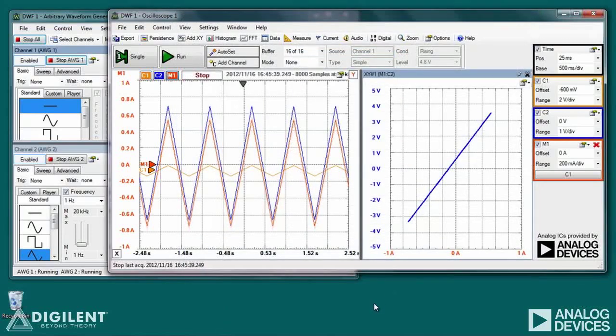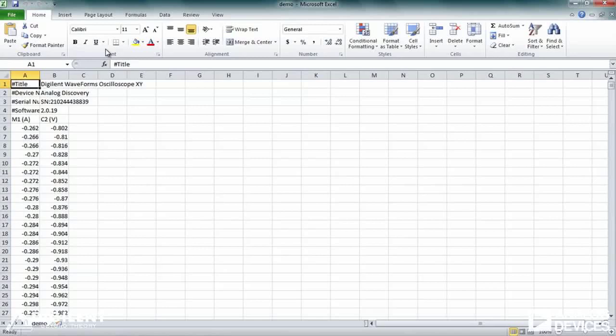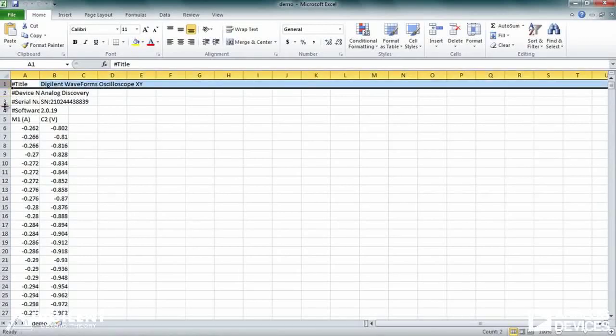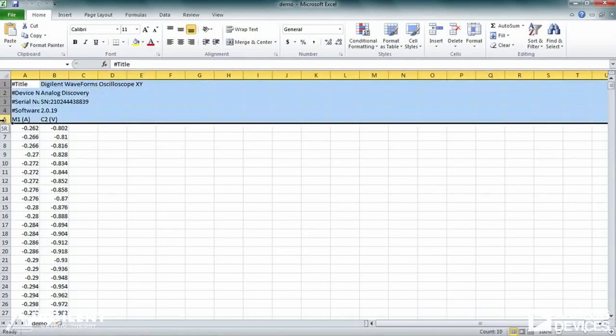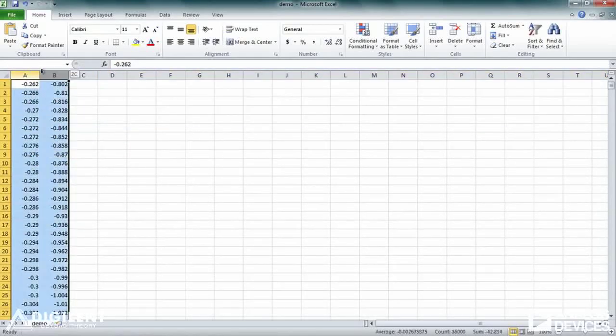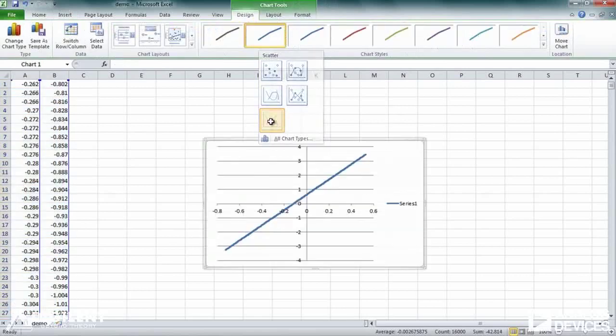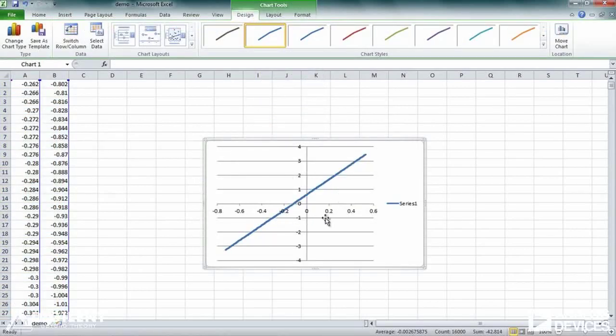Now we can open Excel and analyze our data. In Excel, we'll open our CSV file. We use the file demo. We don't need the heading. I'll select those and delete those rows. Now we want to create an XY plot out of this data. Let's insert a scatter plot. There's our data.